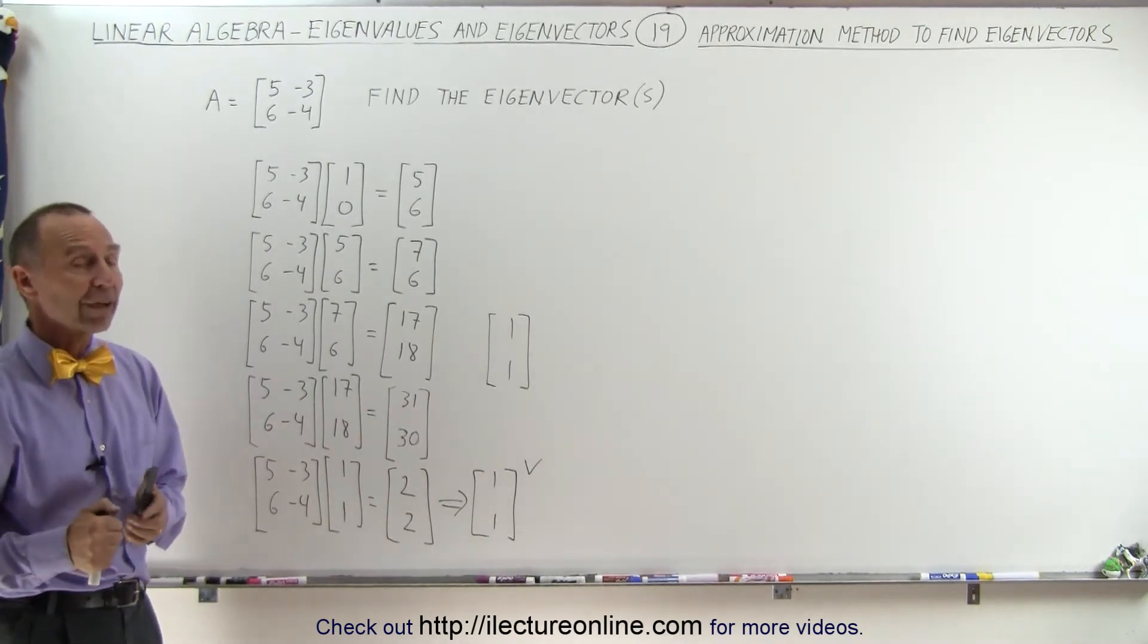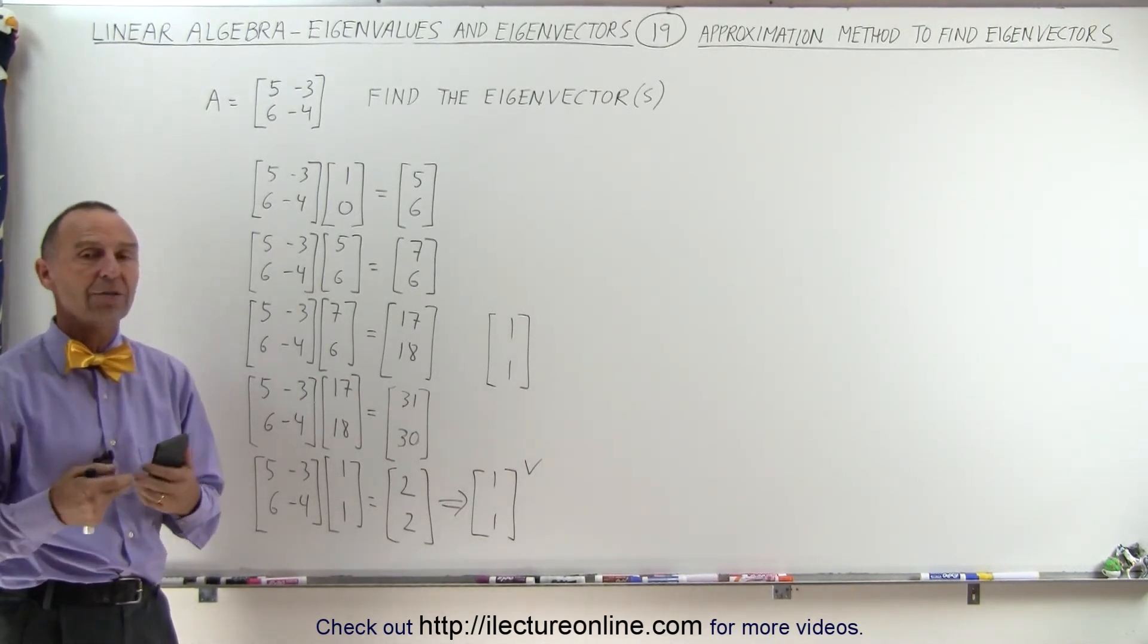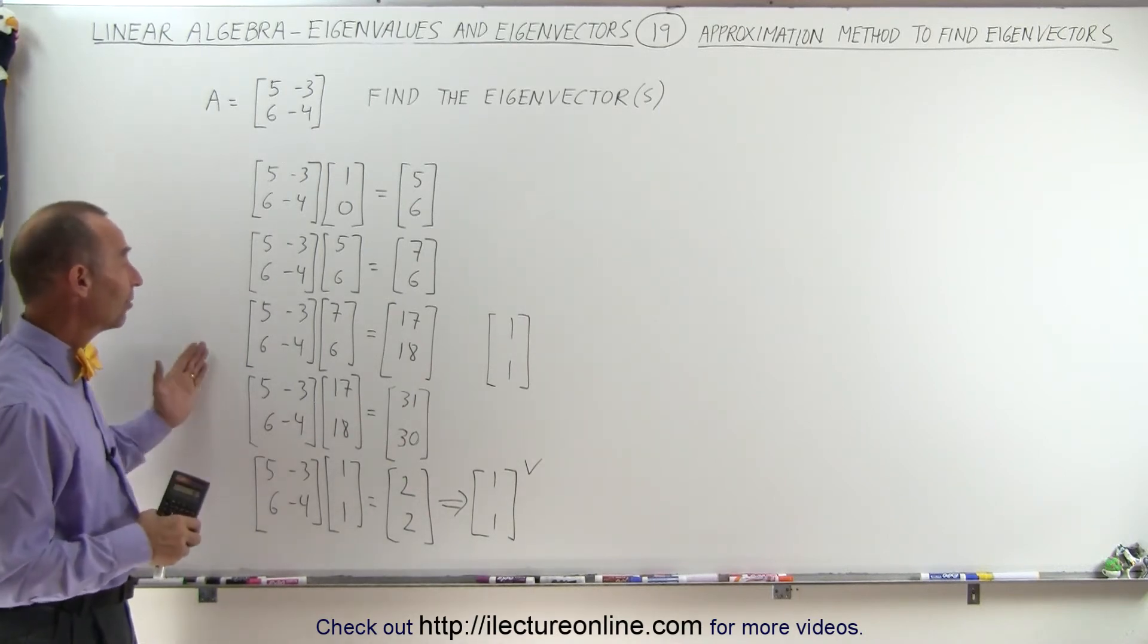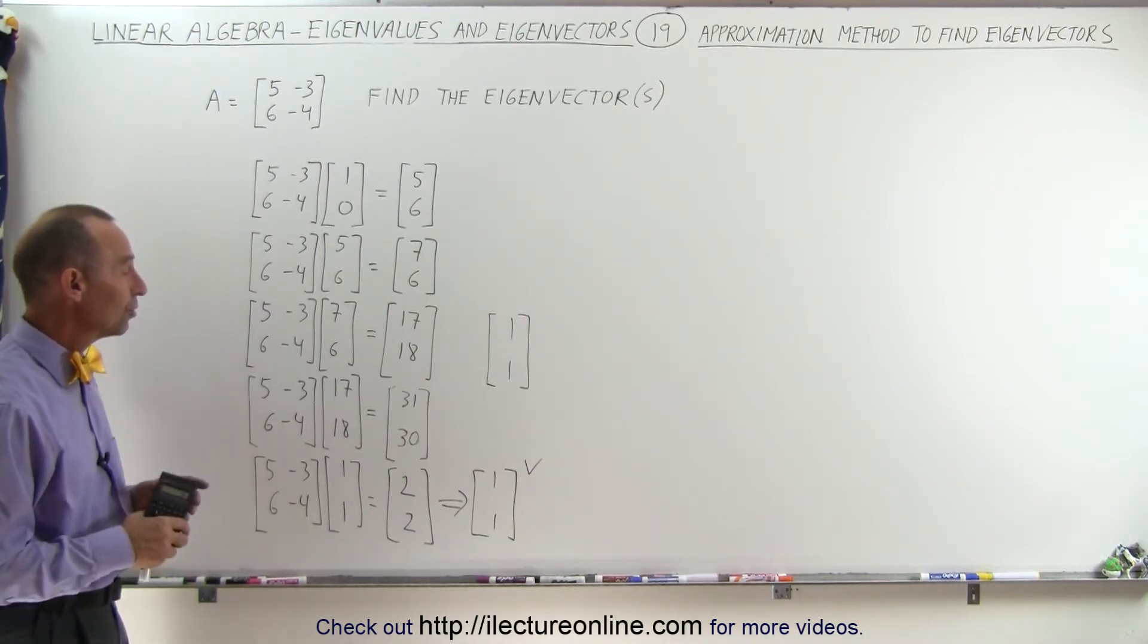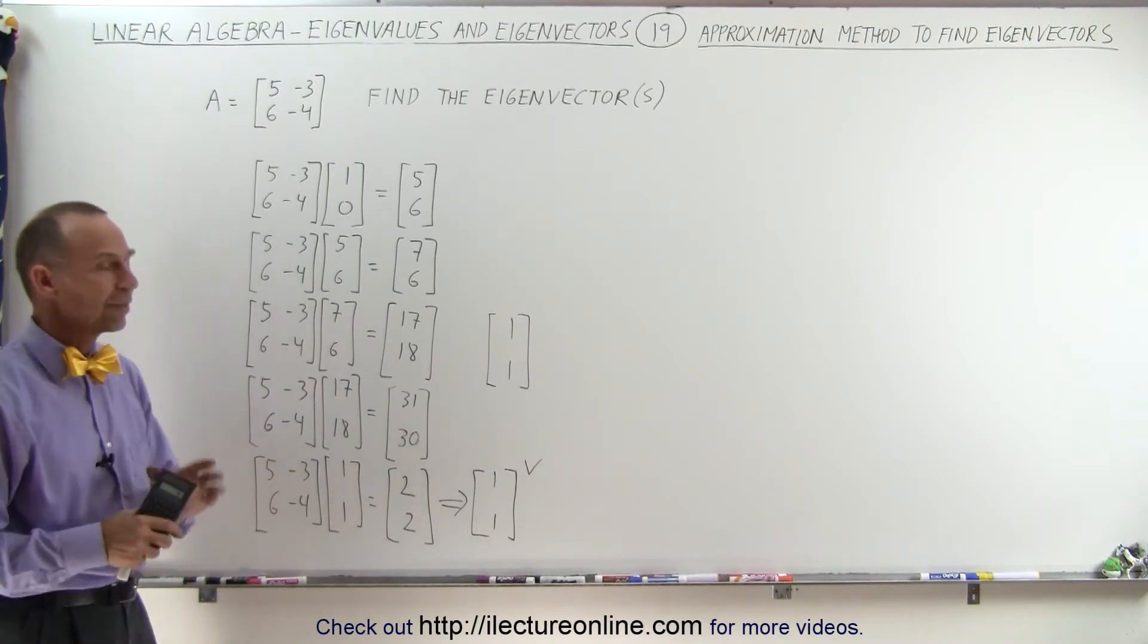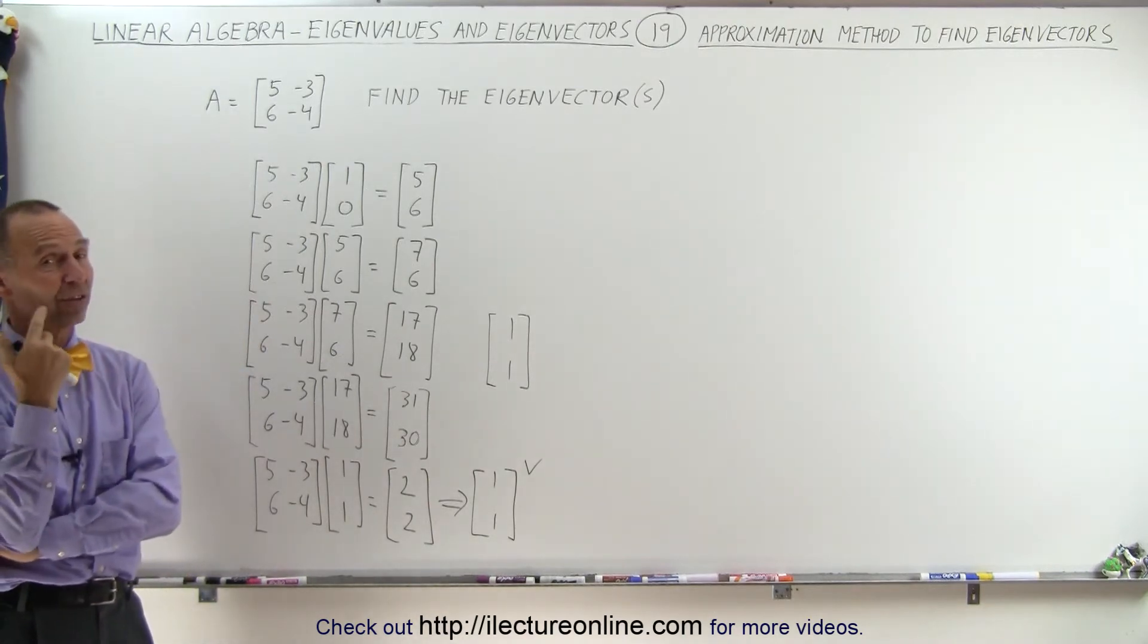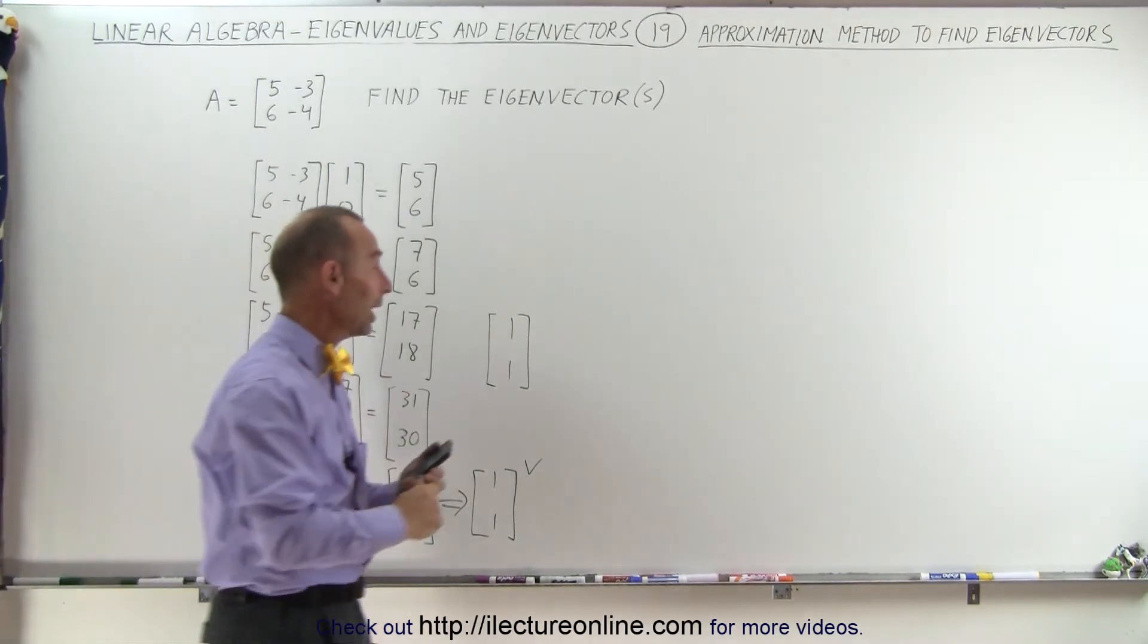Now, it's not the only eigenvector, and later on we'll show you how to find all of the eigenvectors of a particular matrix, but this is definitely a good way to see that this is one of the eigenvectors. Now you say, well, you started with 1, 0. What happens if you start with 0, 1? Well, give it a try and see what happens.